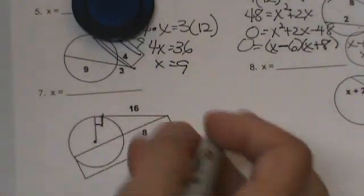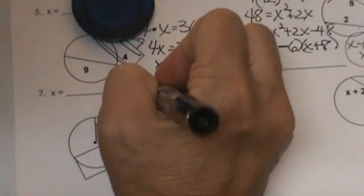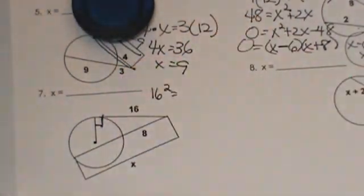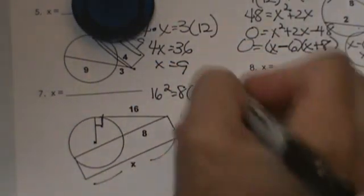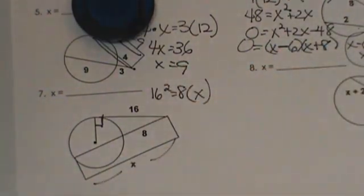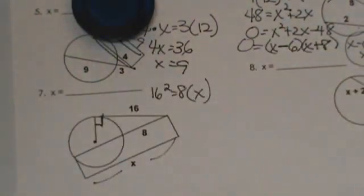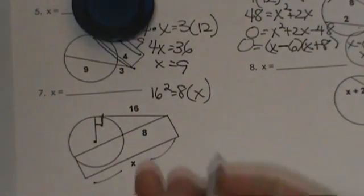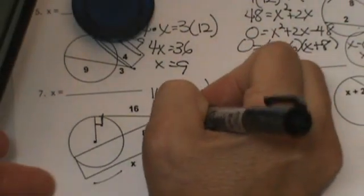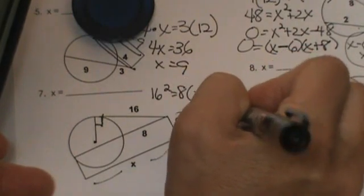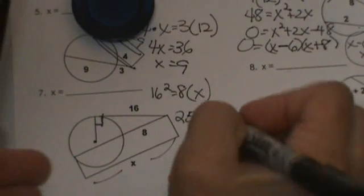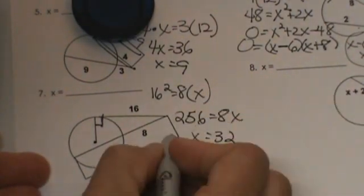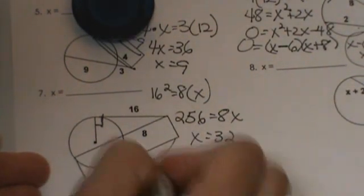We are going to take our secant segment and square it. We are going to set it equal to the outside which is 8 times the whole. No adding to do on this one because x represents the whole. So 16² is 256 equals 8x. This one is not a quadratic so it makes it a little easier. So x is 32.